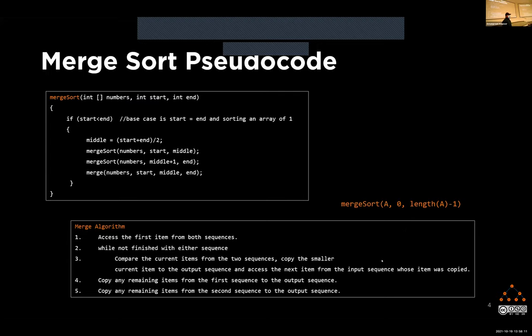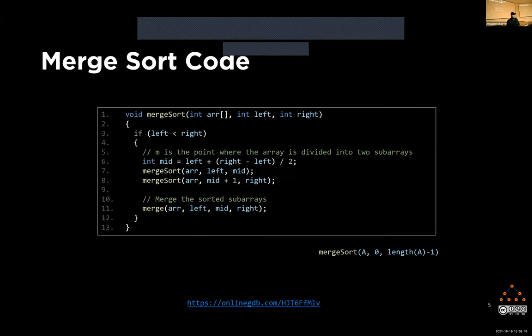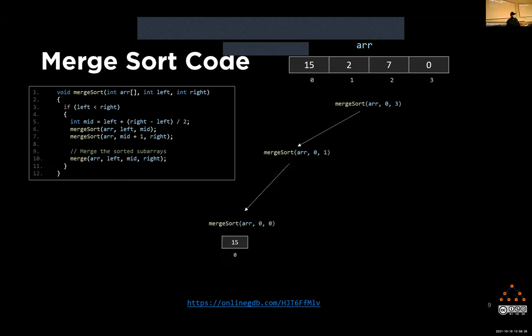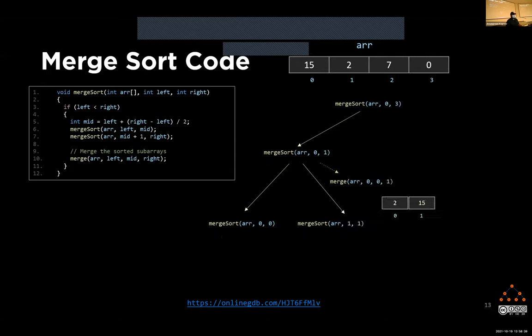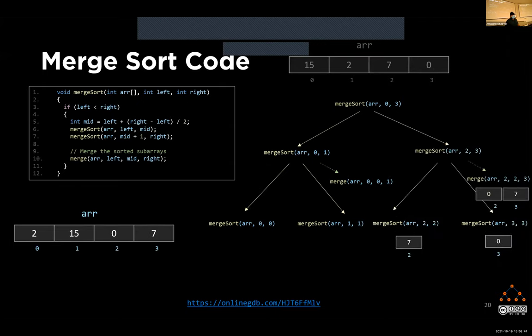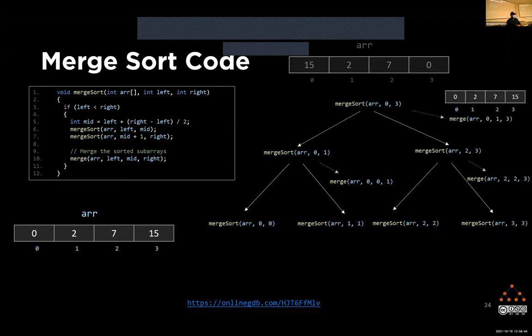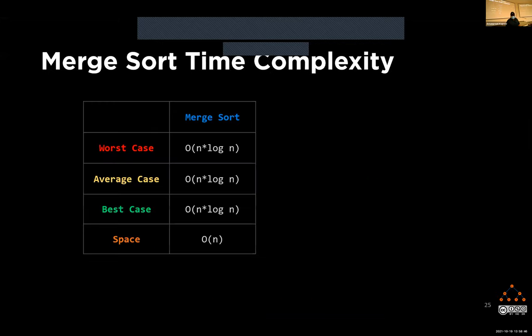Just a quick recap — we covered merge sort. I actually added slides with visualizations that I'm not going to cover now. They are uploaded on Canvas. I gave you a walkthrough on how the recursive calls were behaving, but if you need a neater set of slides, just use those — they explain how the recursive call stacks are working. I'll keep moving forward since we've already covered merge sort.